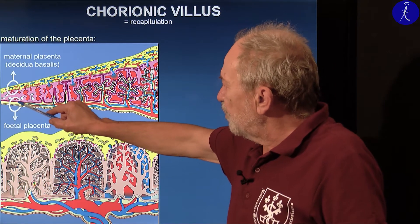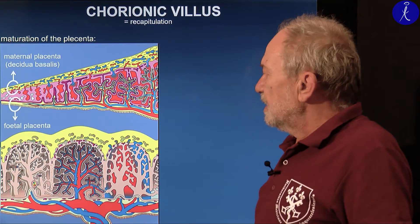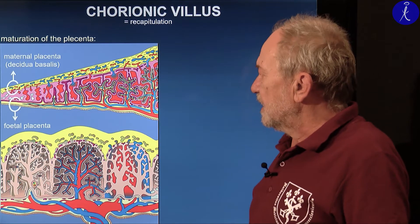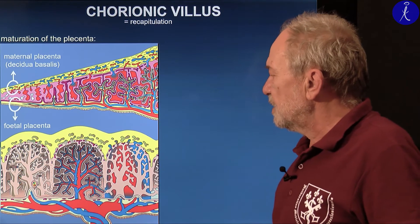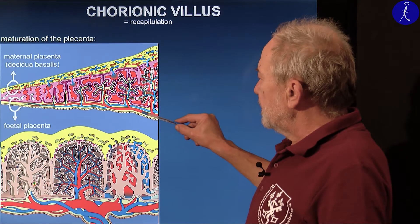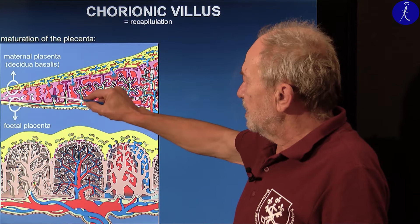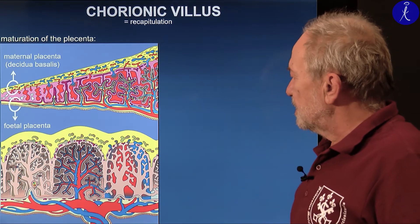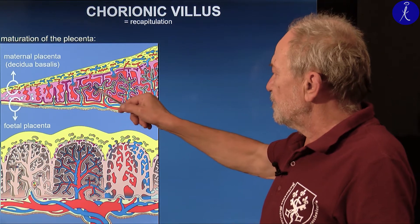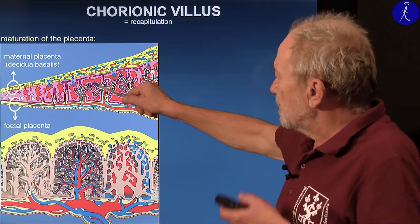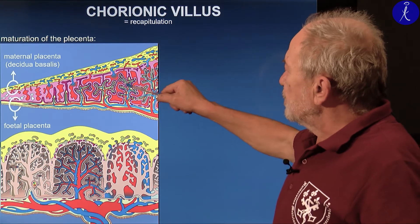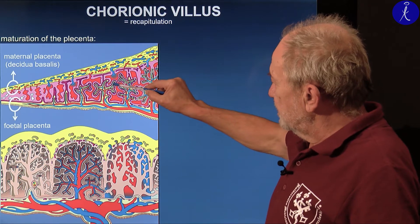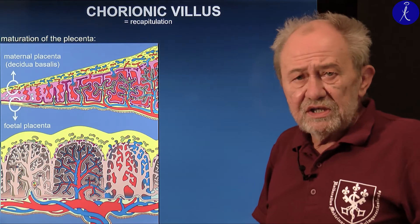When only the trophoblast cells proliferate and make an elevation, these are the primary chorionic villi. When the extraembryonic mesoderm invades into the center of the villus, you call it a secondary chorionic villus. And when the umbilical vessels grow capillaries into the center of the villus, then you call it a tertiary villus. This should not be mixed with the branching order of the villus, because the villus gradually grows branches — once, twice, a third time — just to increase the surface for exchange of materials. You can talk about primary, secondary, tertiary branch, but all these belong to the tertiary chorionic villus.